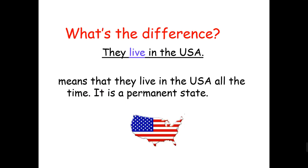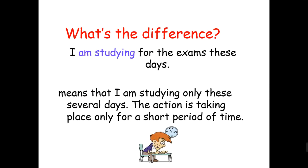What's the difference? 'They live in the USA' means they live there all the time — it's a permanent state. 'I am studying for the exams these days' means I'm studying only for these several days. It's not permanent; the action is taking place for a short period of time.